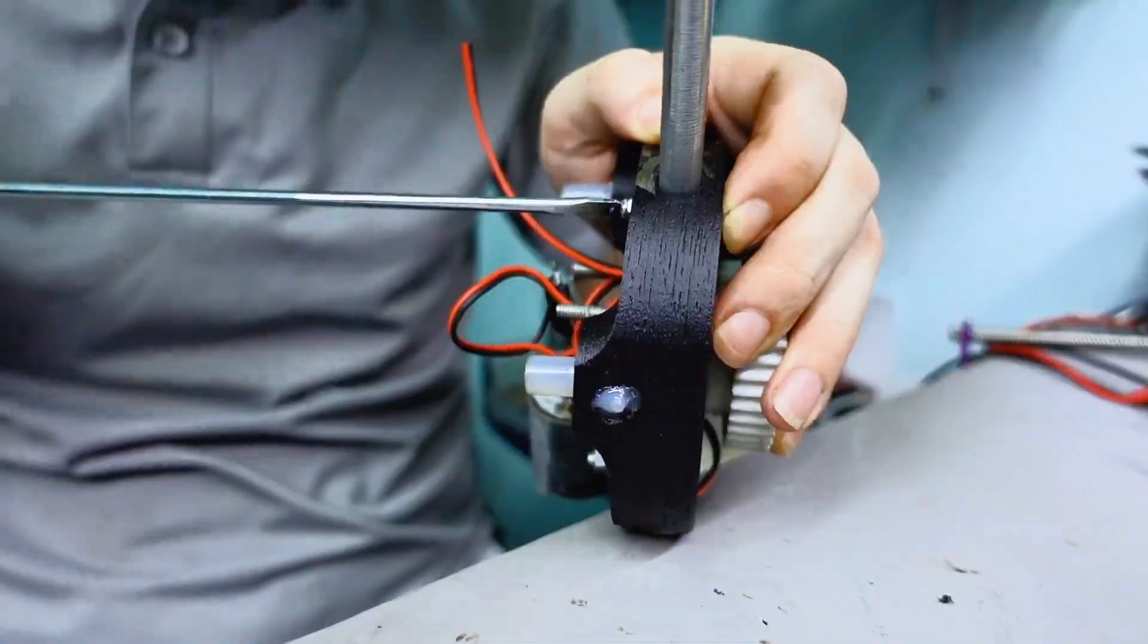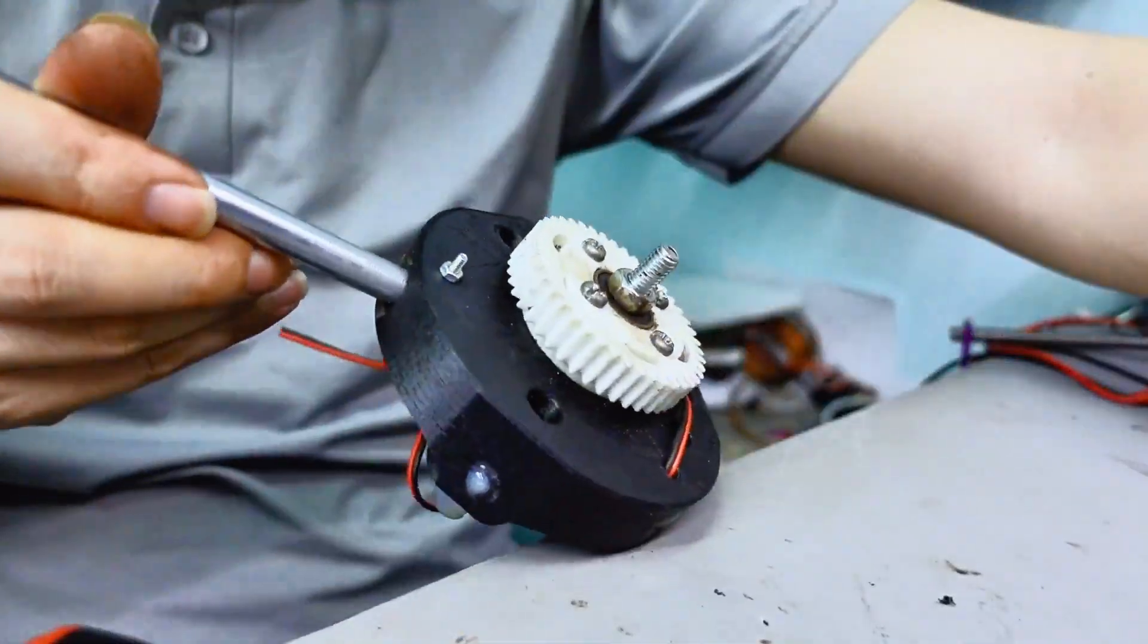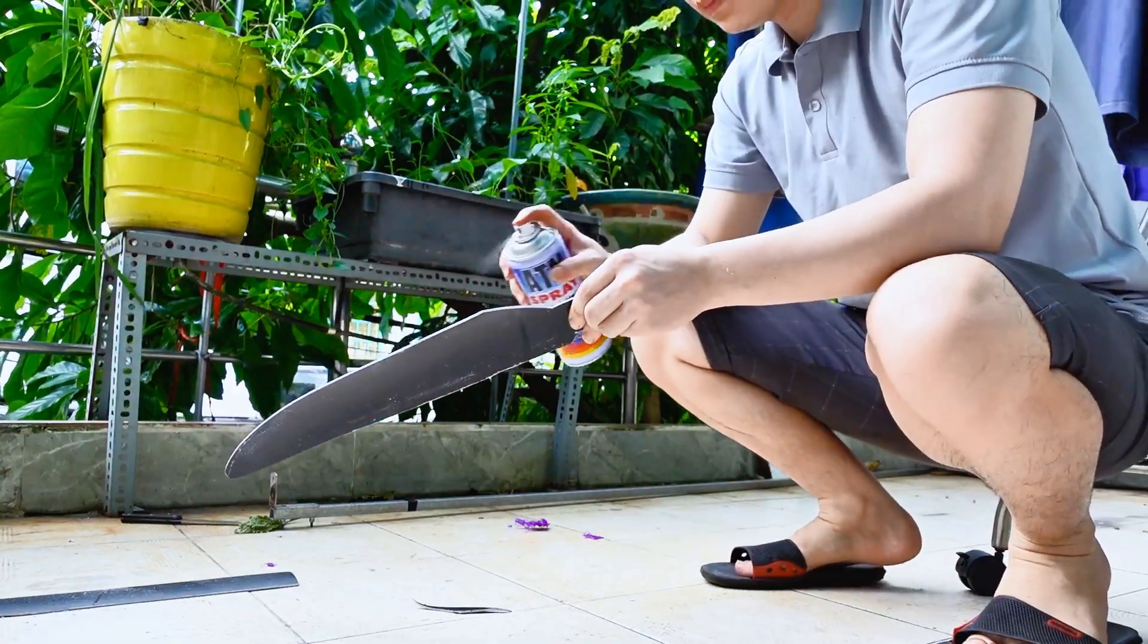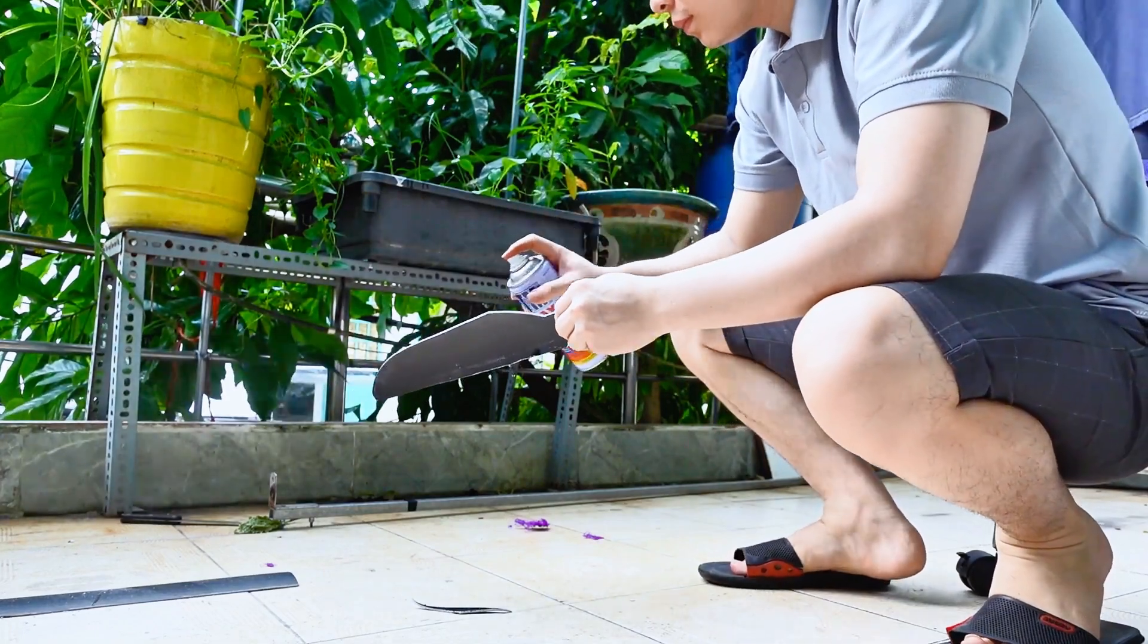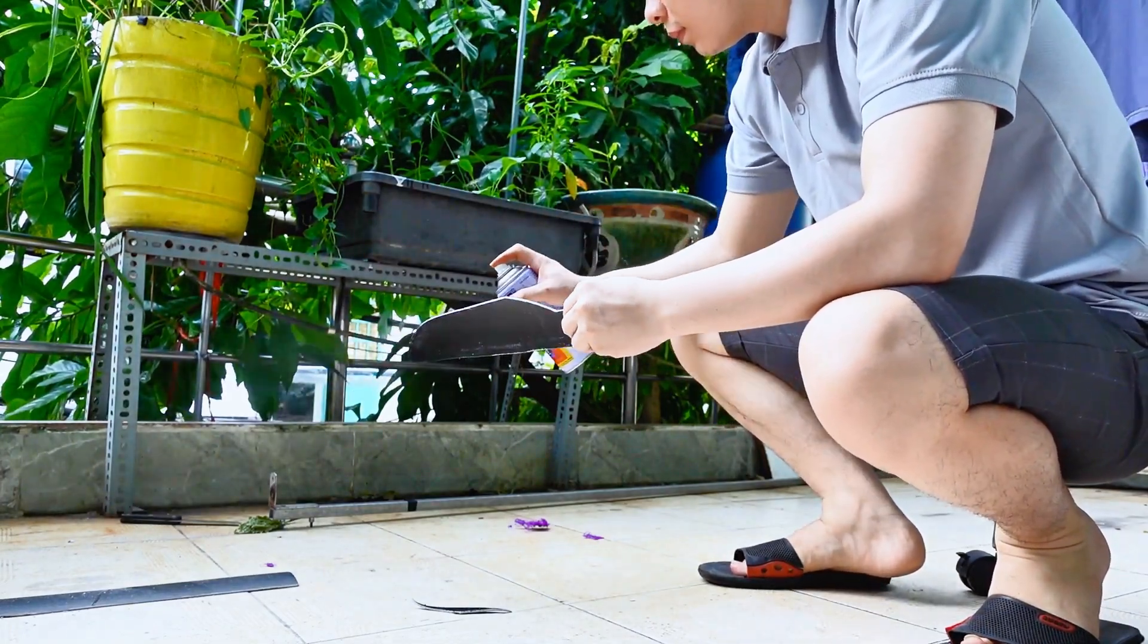Now let's move on to decorating the fan blades. I'm going to use two colors, black and white. Once sprayed on, the blades will really stand out and look much better.